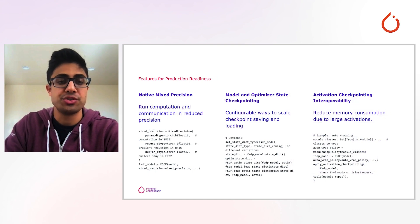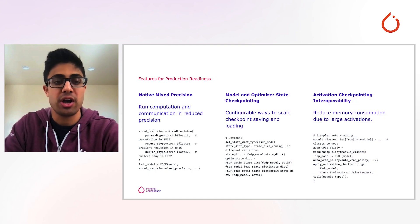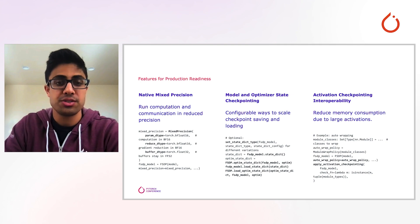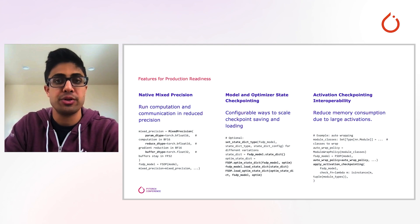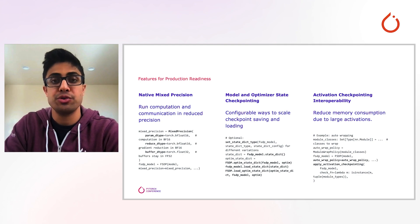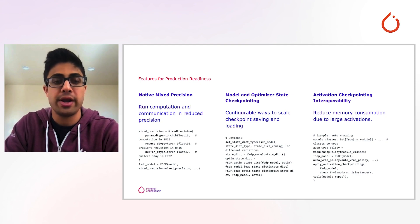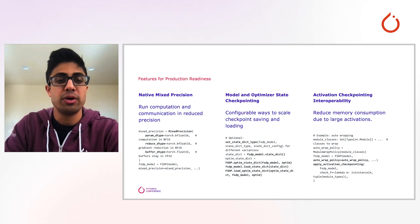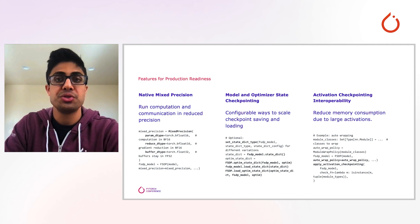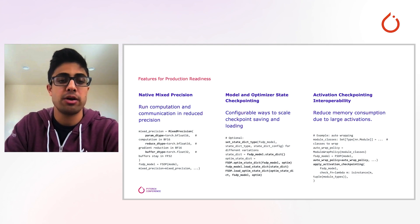We'll now cover a handful of features that we've enabled on various production workloads. First, mixed precision training enables users to run computation and communication in reduced precision. The API is flexible enough to allow users to choose the reduced data type independently for buffers and gradient communication. Next, we've built out robust model and optimizer state checkpointing that allows users to configure whether to save and load full or sharded checkpoints depending on their model scale and upload latency requirements.